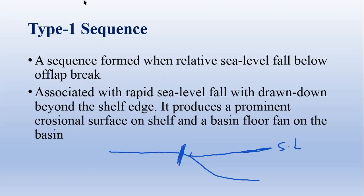The prominent diagnostic features associated with a type 1 sequence are: an erosional surface on the shelf — because due to sea level fall, river erosion occurs, and the eroded sediments are deposited on the sea floor in the form of a basin floor fan. So there are two distinguishing features: one is the erosional surface on the shelf region, and another is the basin floor fan in the basin.